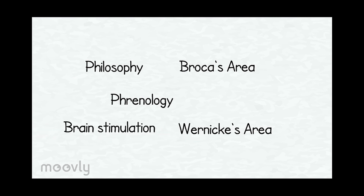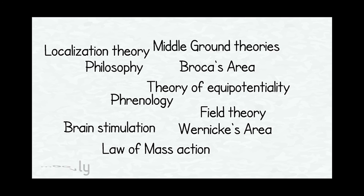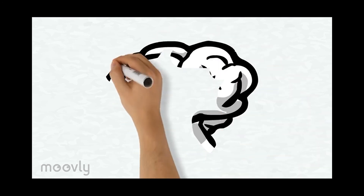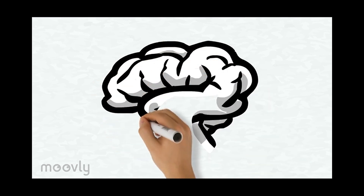Luria's model continues to have immense influence on neuropsychological methods today. From early philosophical ideas to phrenology, to the discovery of Broca's area and Wernicke's area, from brain stimulation studies, the emergence of equipotentiality, the law of mass action, the localization theory, field theory, and middle-ground theories have all had a great influence on neuropsychological methods today as we explore brain-behavior relationships. These are the building blocks of modern neuropsychology.